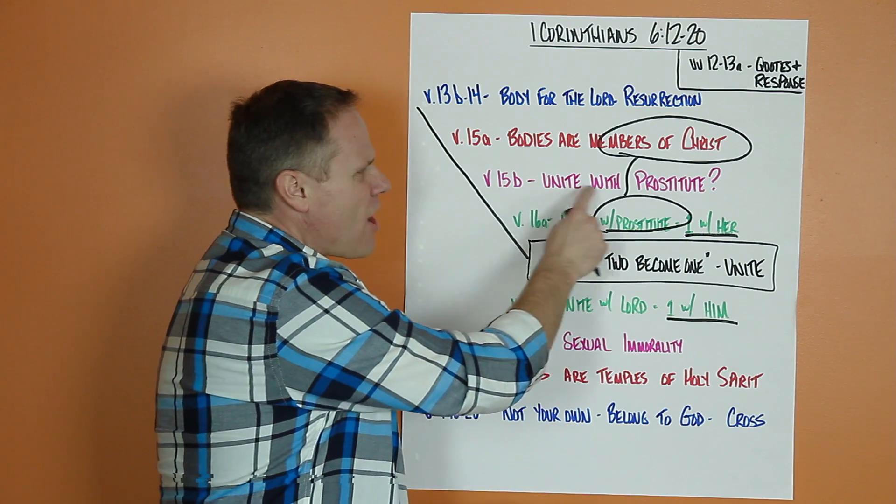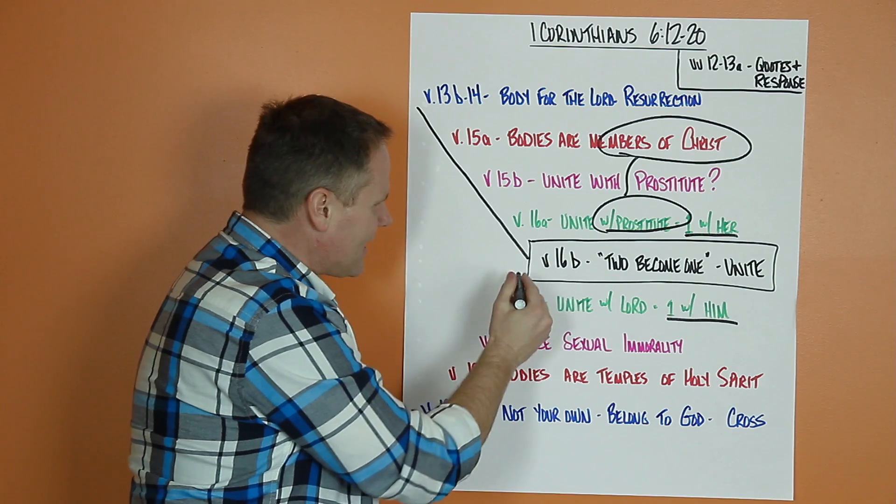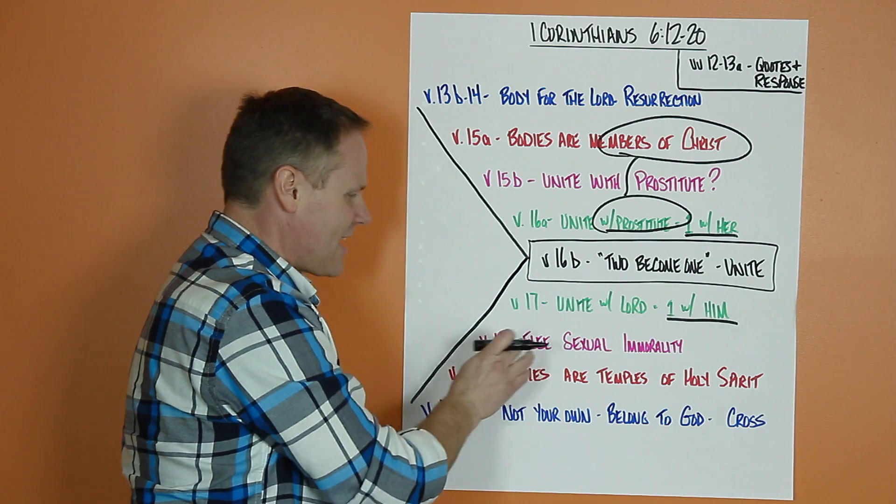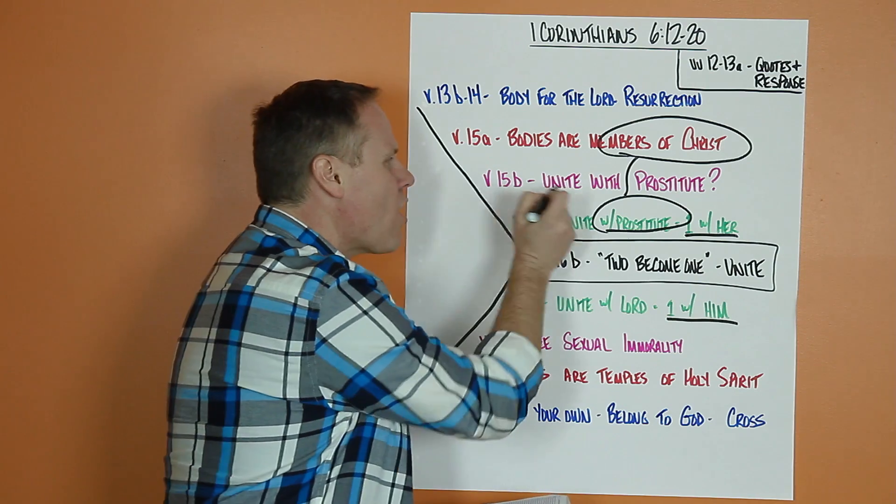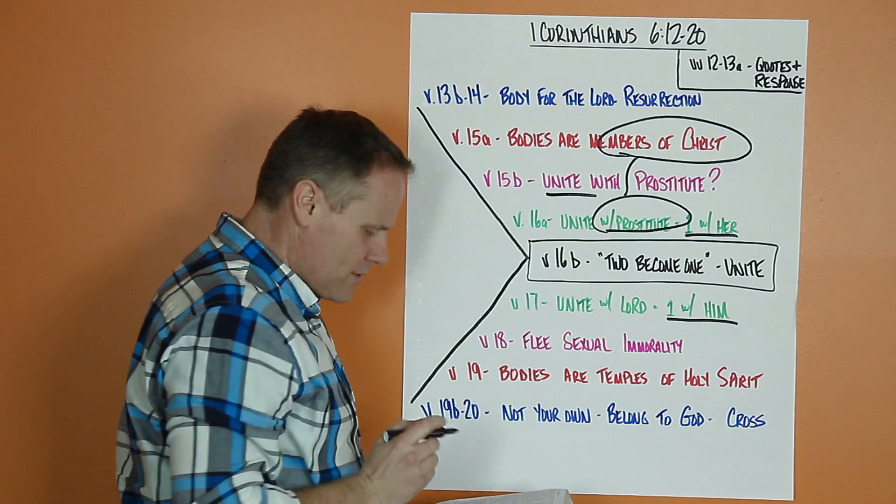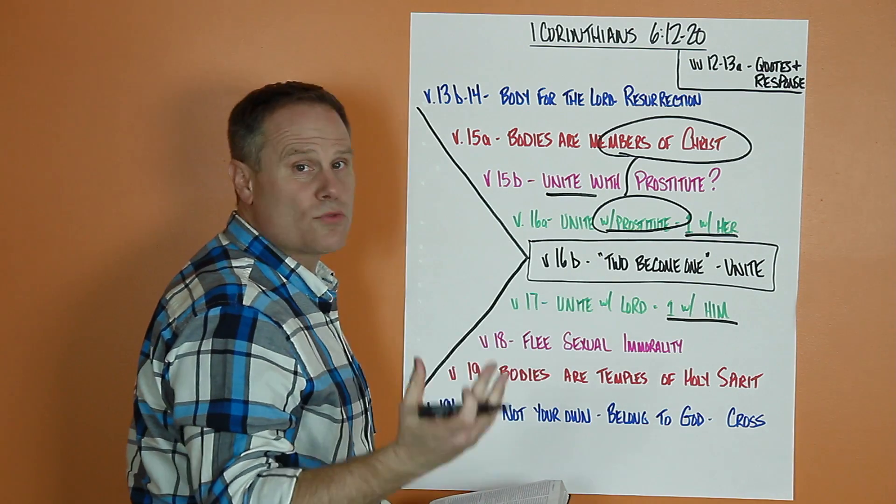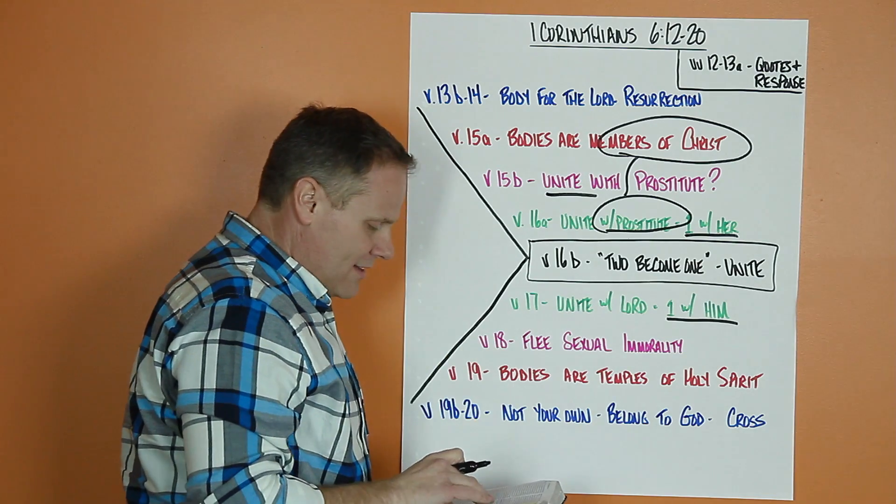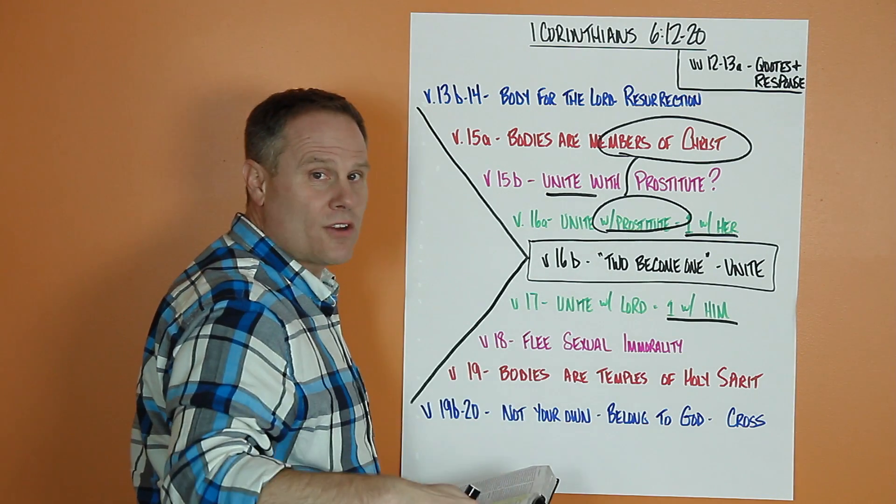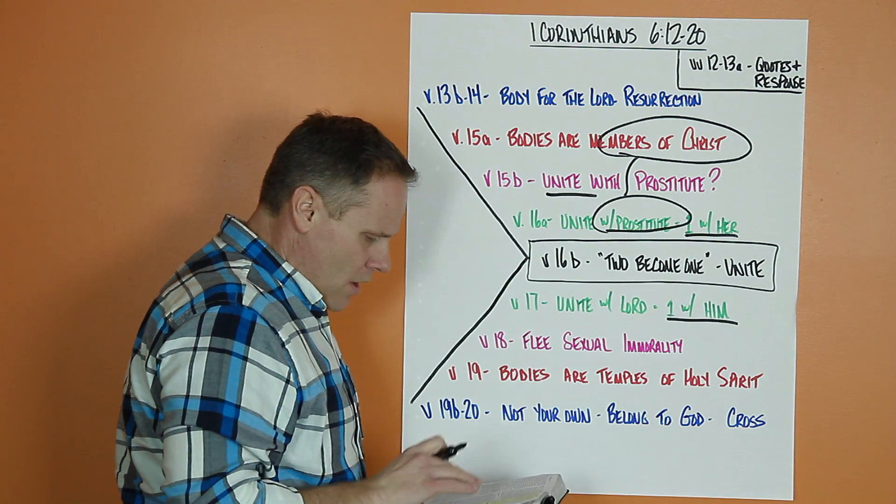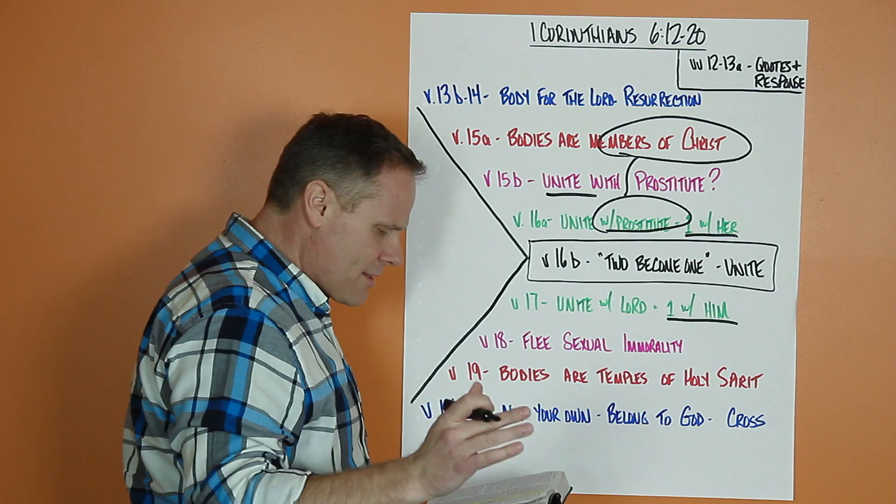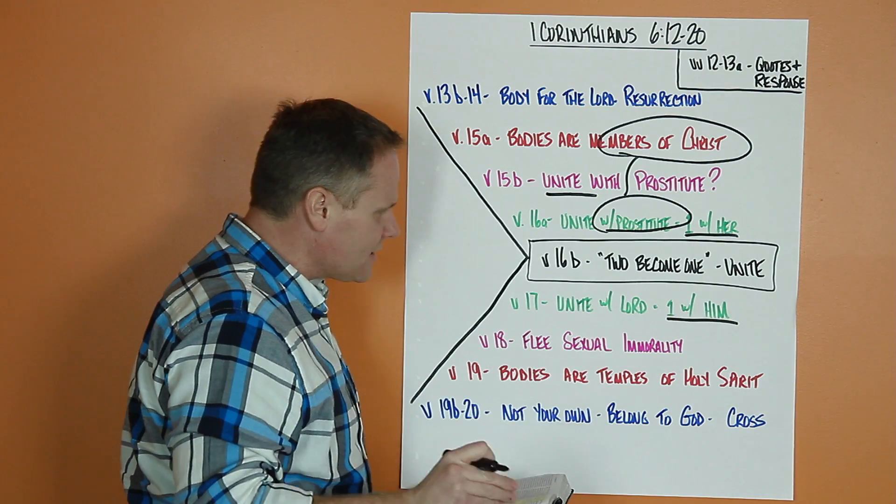Up here, it talked about, are you going to unite with a prostitute? This is on the second half of the chiasm. Now he's going to say, verse 18: flee sexual immorality. Don't do this. Don't unite with a prostitute. Of course, prostitution was a big issue in Corinth, more so than it is common in American Christianity. But it was the huge issue. All other sins a person commits are outside of the body, but whoever sins sexually sins against their own body.